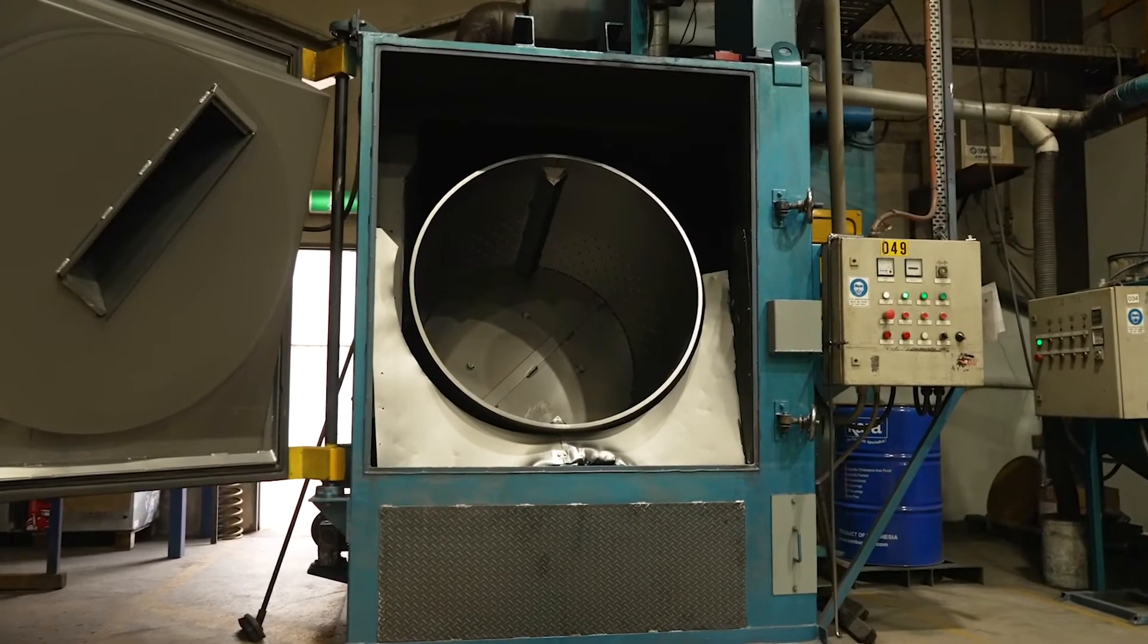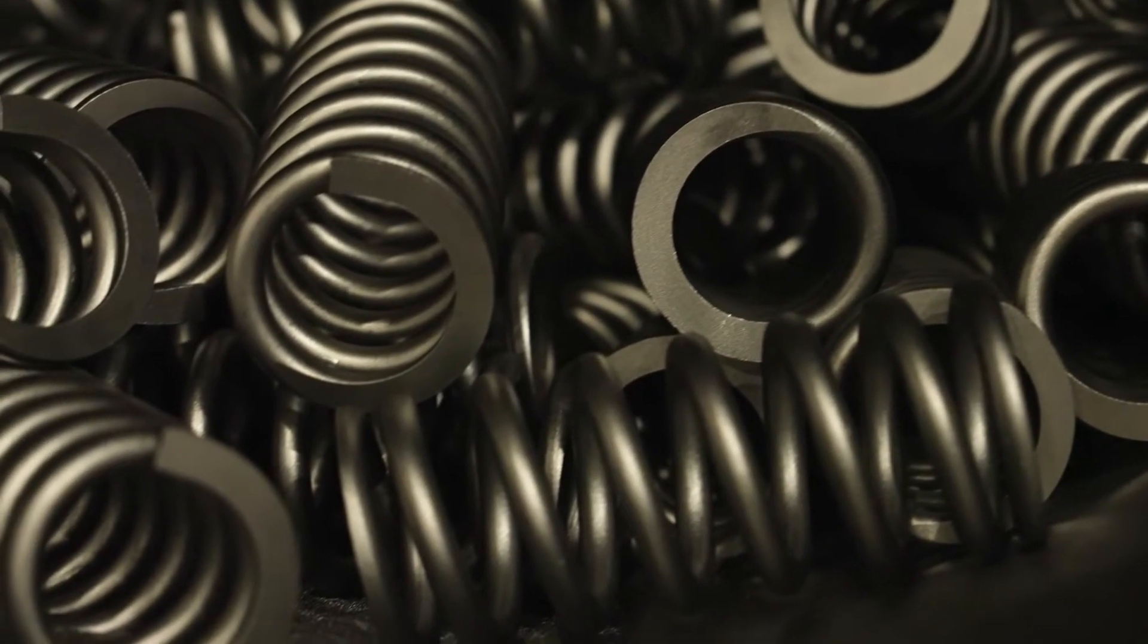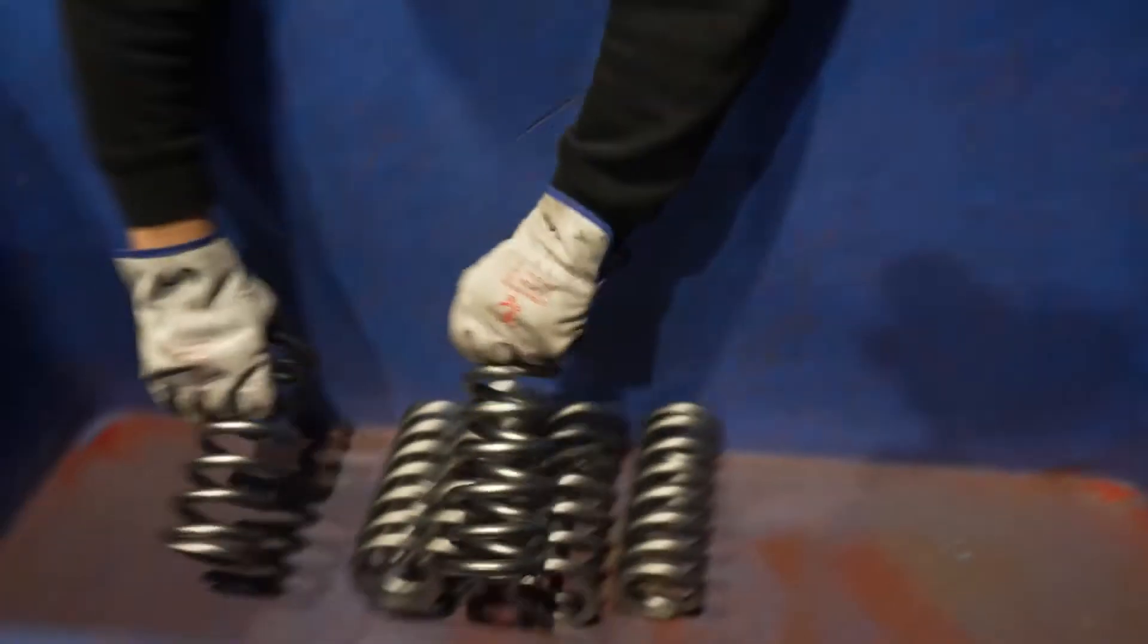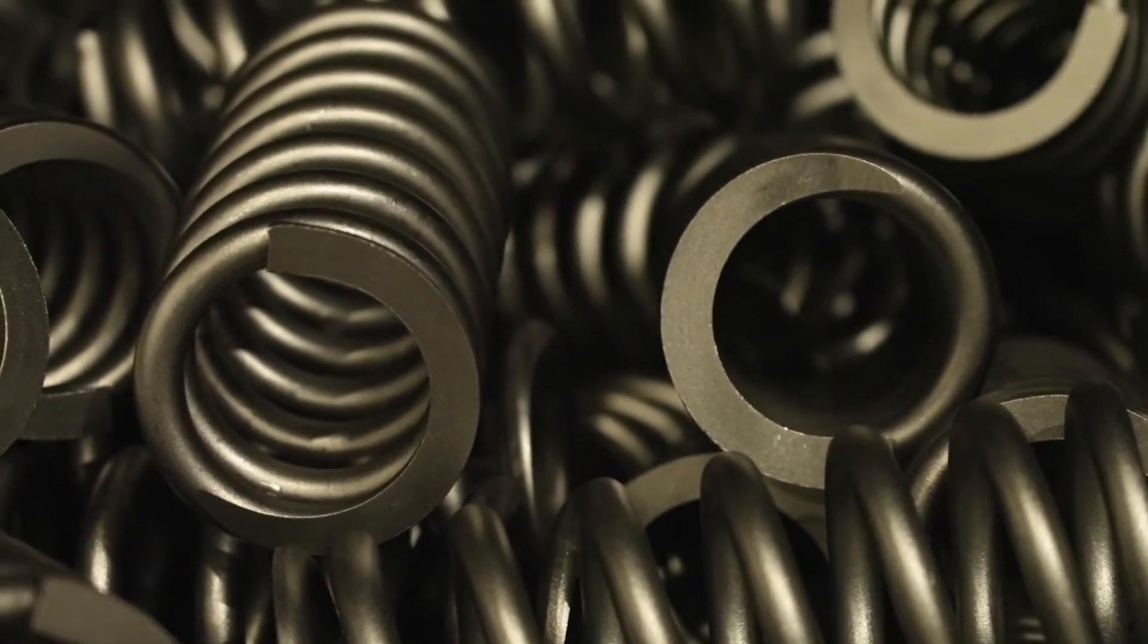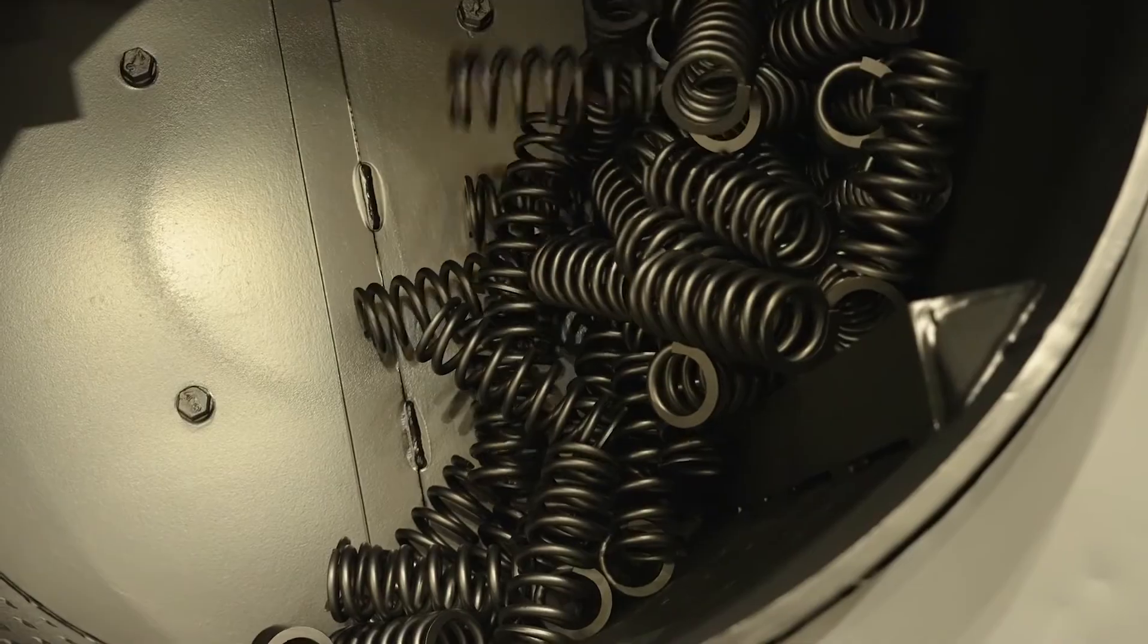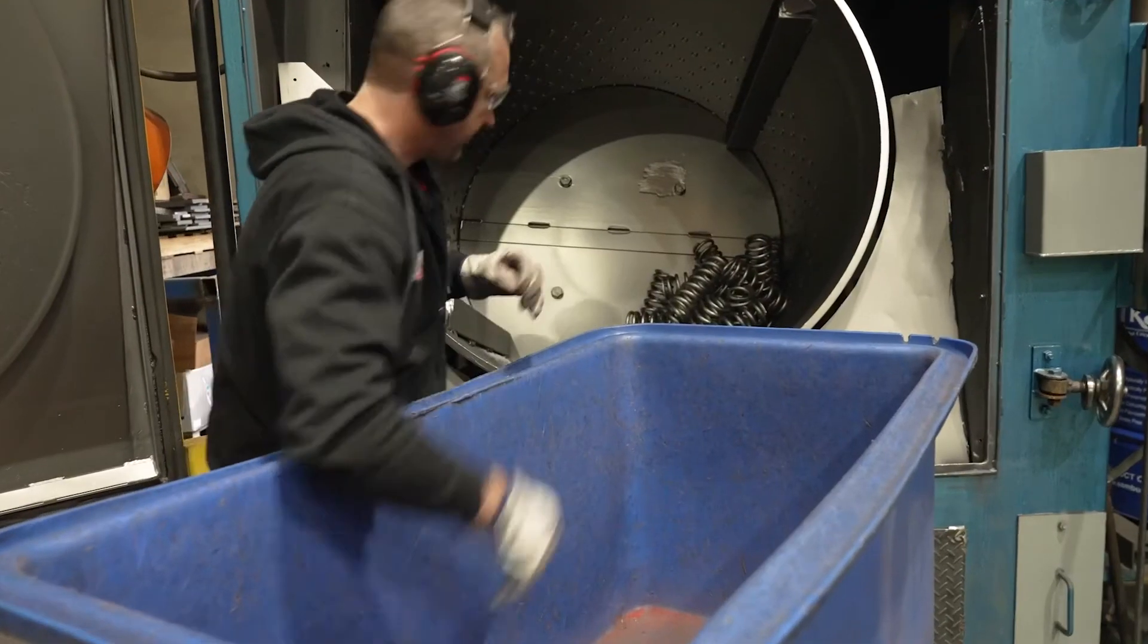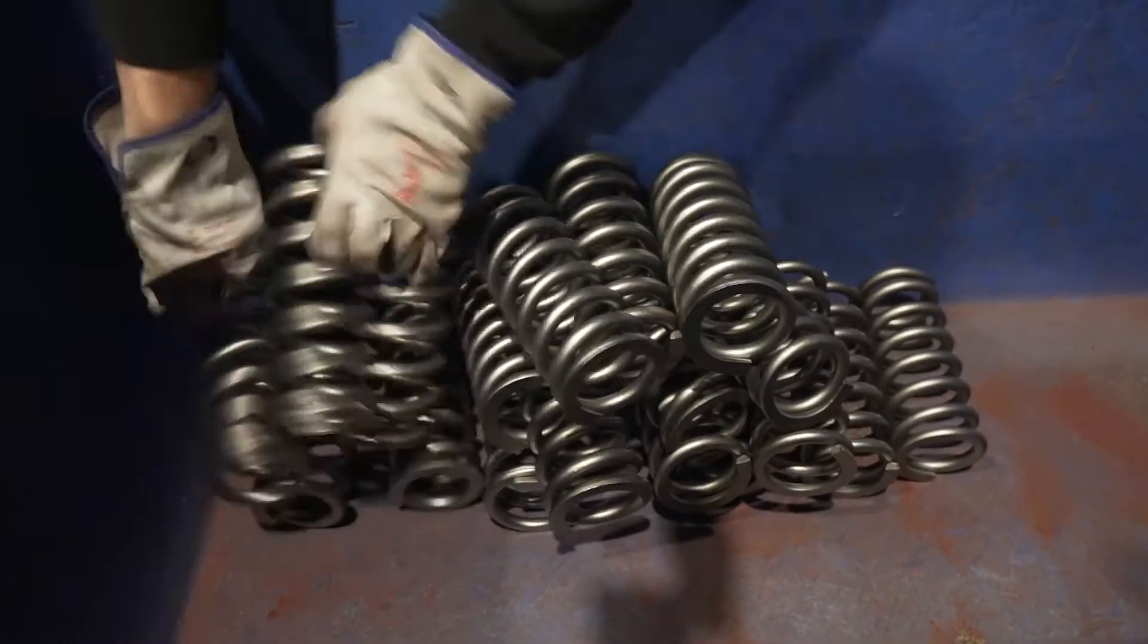Next, the coils are hand-loaded into the shot-peener, a machine that fires small steel beads at the coils while they're rotated in a large drum. This step helps to remove any unwanted materials, leaving a shiny clean surface. It also helps to relieve stress from the surface of the coil, removing impurities that could later create problems. The effects of shot-peening last approximately 10 times longer than sandblasting.